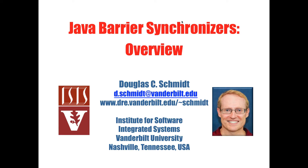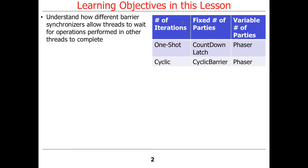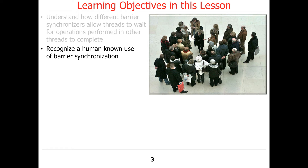We're going to talk about something called barrier synchronizers. I'll first give you an overview of what a barrier synchronizer is, and then I'll talk about a couple of different barrier synchronizers that are common in Java. We'll cover what a barrier synchronizer is and how it's used to allow threads to coordinate their waiting on different kinds of conditions, and the criteria used to distinguish the different mechanisms that Java provides.